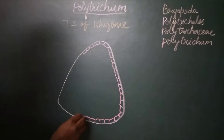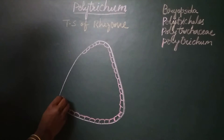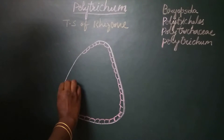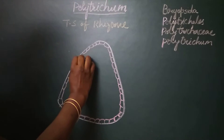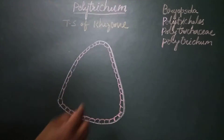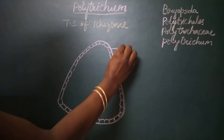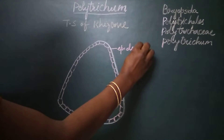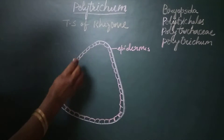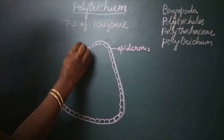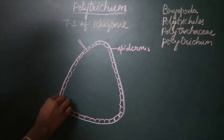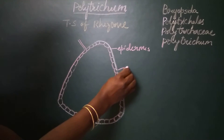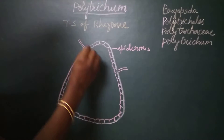Most of the epidermal cells give rise to rhizoids, so the rhizoids are epidermal in origin. This is the outermost layer which is the epidermis, and from the epidermis you can see the rhizoids emerging out. These are the rhizoids.